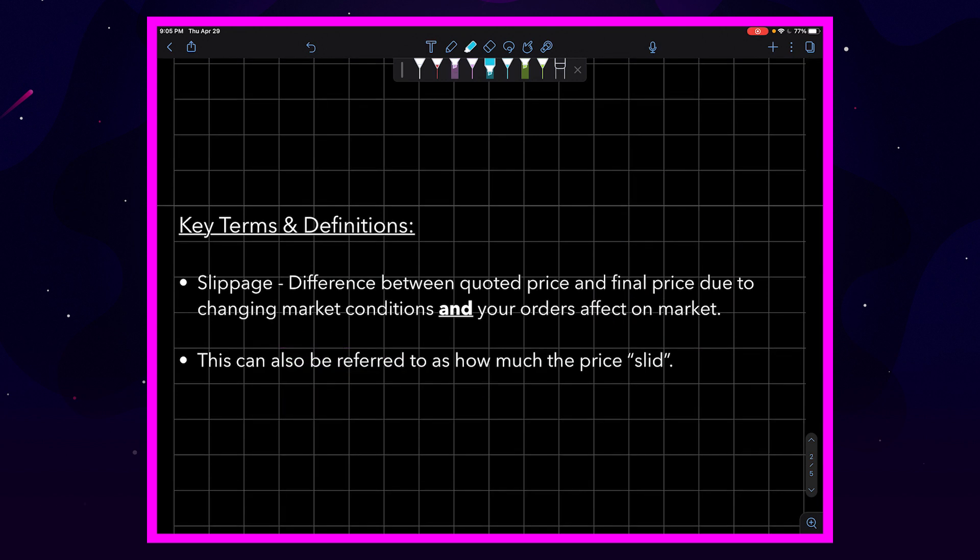Before we jump into anything too specific, we have our key terms and definitions to go over. Slippage is the difference between the quoted price and the final price. This is due to changing market conditions and your order's effect on the market.